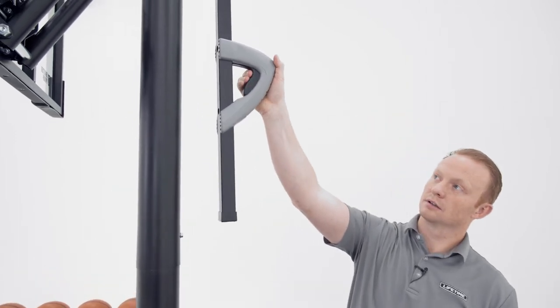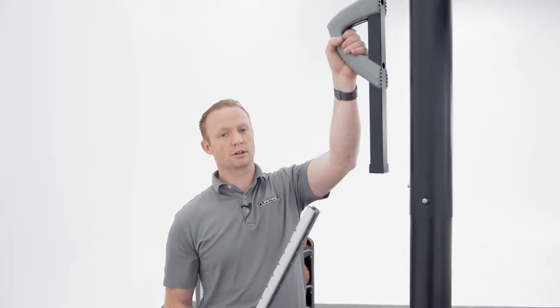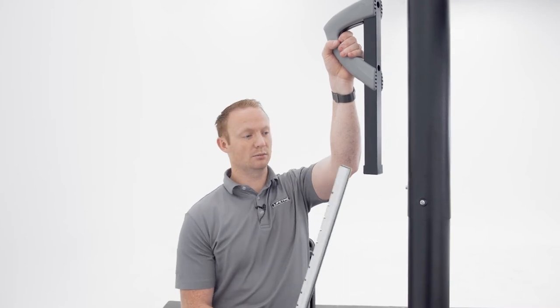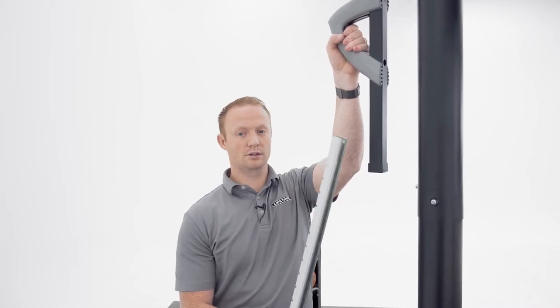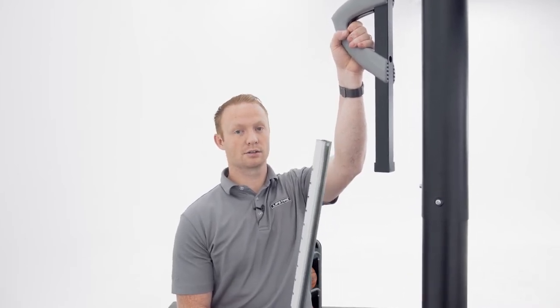Before we move on make sure the trigger is functioning properly. Now that we know the trigger is working, squeeze the trigger and slide the inner channel into the bottom of the outer tube making sure that the notch end goes in first and that the notches are facing you.